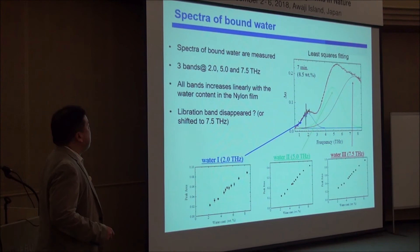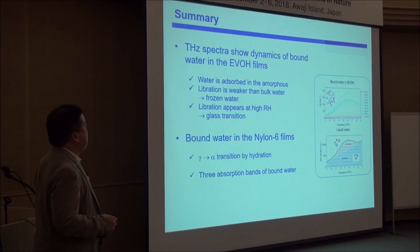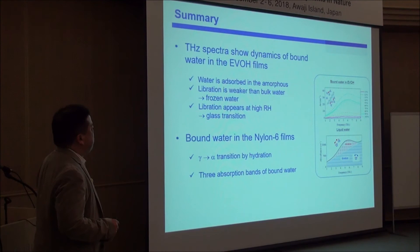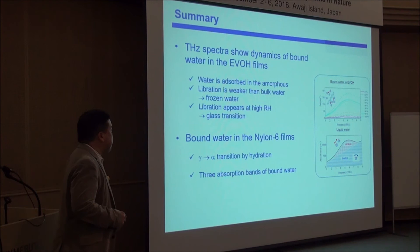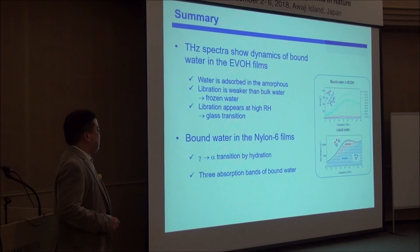To summarize my talk: for EVOH, at low humidity the water is ice-like with only intermolecular stretching vibration, and the librational vibration disappears. But it becomes more liquid-like bound water at higher humidity, where libration appears again. We are now also studying nylon 6 to see much different types of bound water. Thank you for your attention.